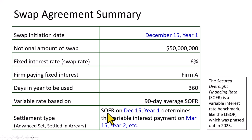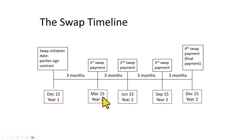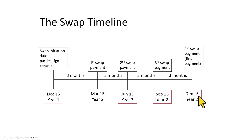The settlement type is called advanced set, settled in arrears. What that means is that on the initiation date, the SOFR — the variable rate on that date — will be used to determine the variable interest payments one quarter ahead, on March 15th. Likewise, the SOFR rate on March 15th will be used to determine what the variable rate payments will be on June 15th, and so on until the end of the swap term.